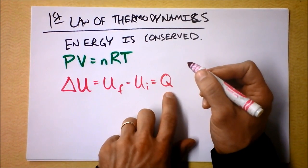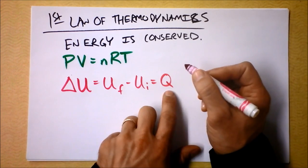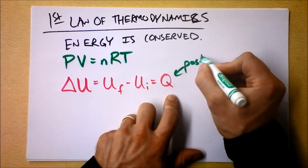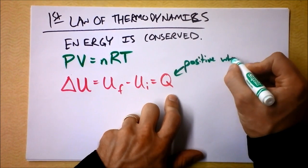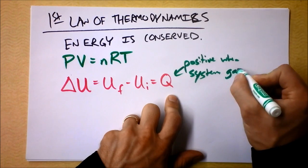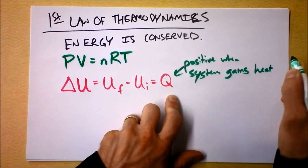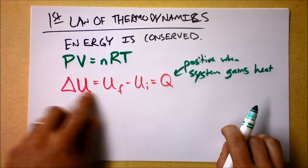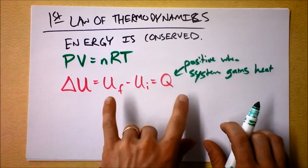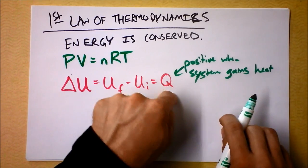And remember that in physics, we're going to call Q positive when the system gains heat. So if that system is gaining heat, then Q is positive, and that makes sense that the final energy will be greater than the initial energy, so the change in energy can be the heat gained by the system.